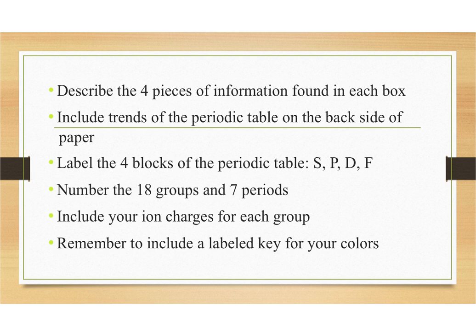Additionally, we will describe the four pieces of information found in each box. We're going to include the trends on the periodic table. We're going to label the four blocks of the table — the S, P, D, and F blocks. This is going to be helpful when we start looking at electron configuration and putting elements together to make chemical compounds.